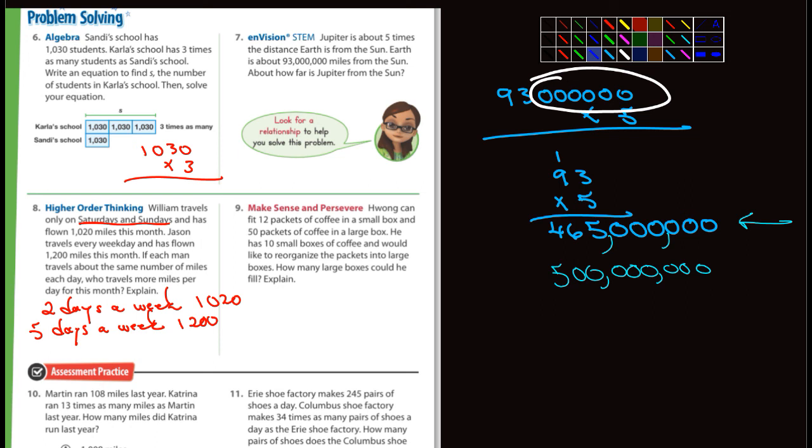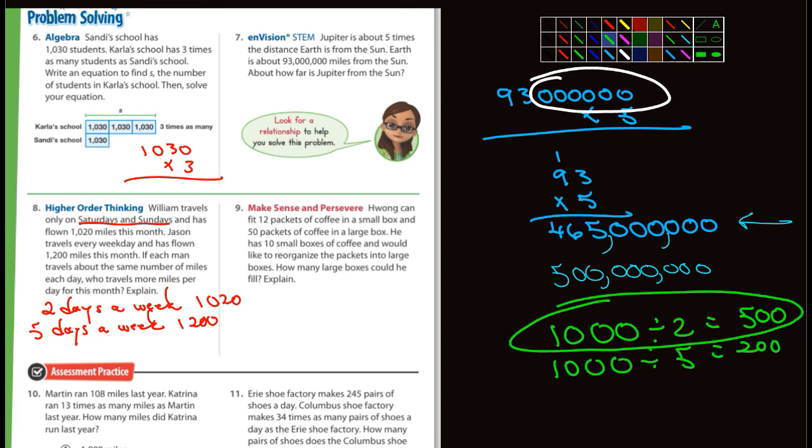Look at it this way. If we were to divide a thousand divided by two, and a thousand divided by five, which one's going to be larger? Well, what's half of a thousand? If you're dividing something by two, we're cutting it in half. That's 500. And how many fives go into a thousand? That's 200. So obviously, you're going to have a larger amount per day here, which is this one right here, which happens to be William.